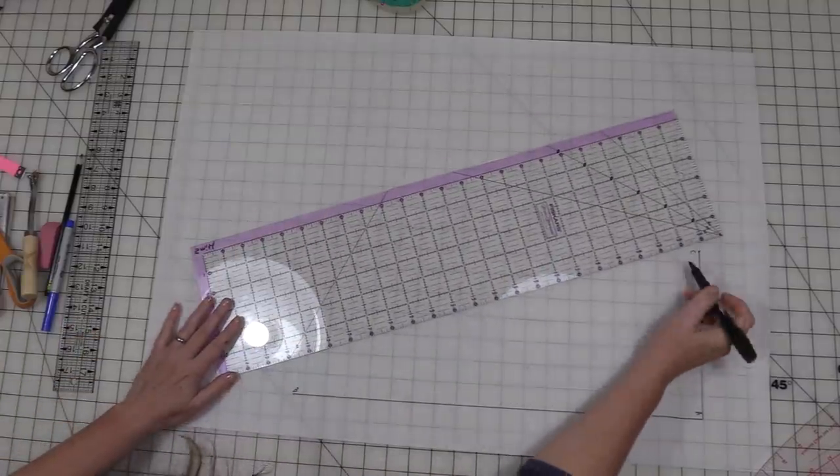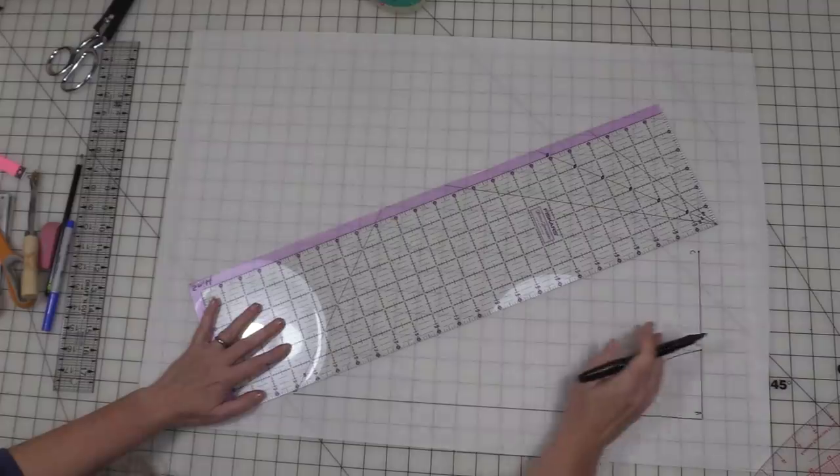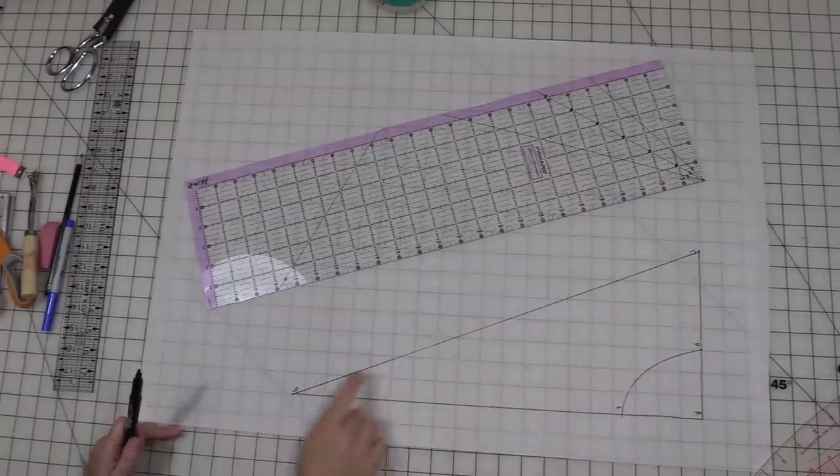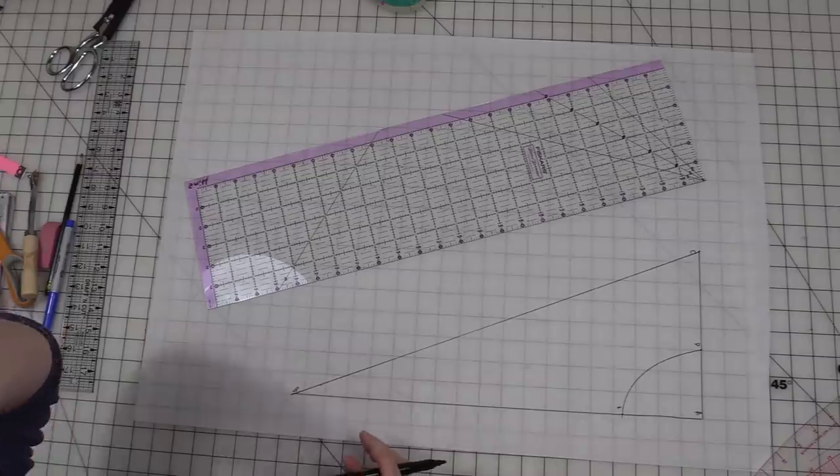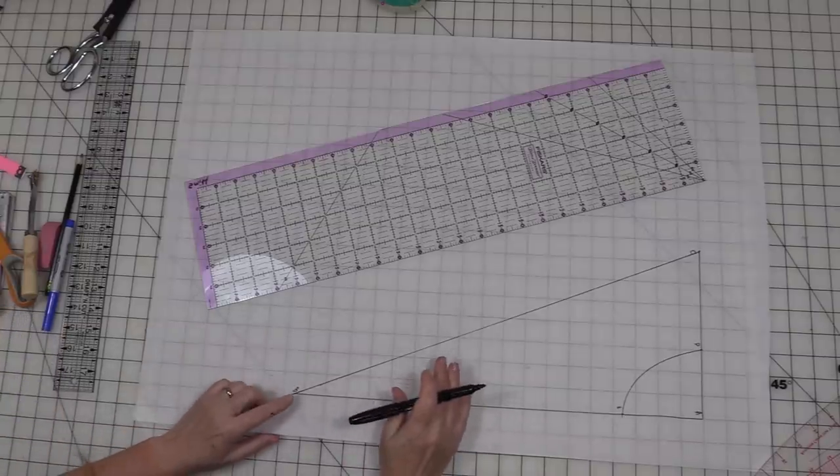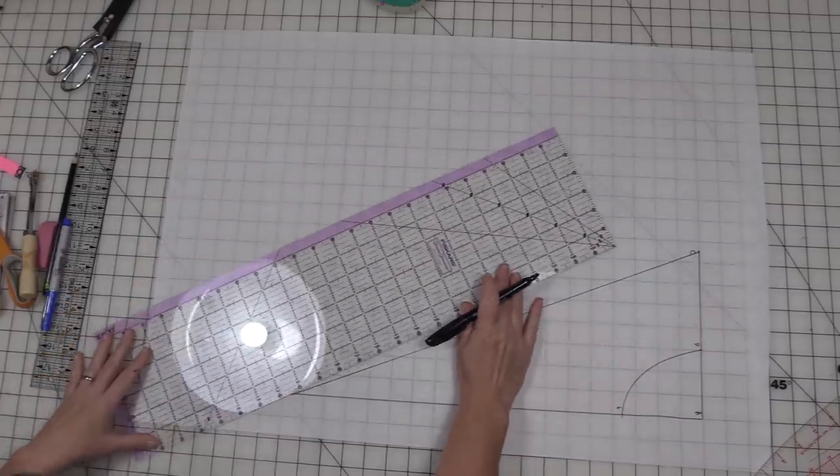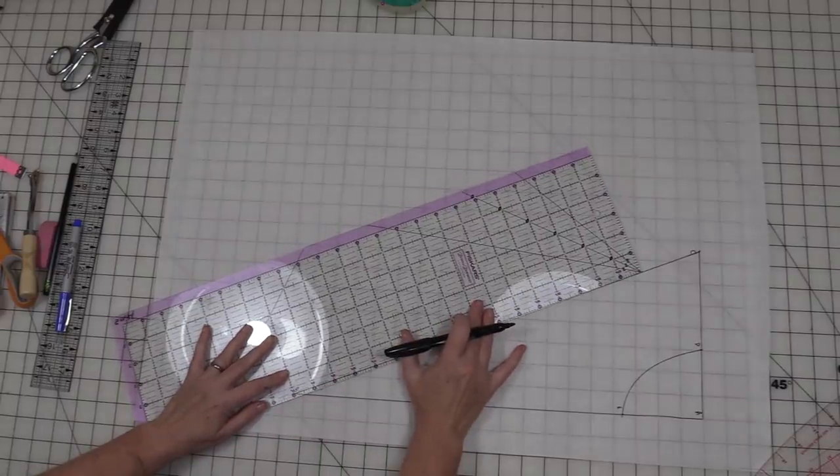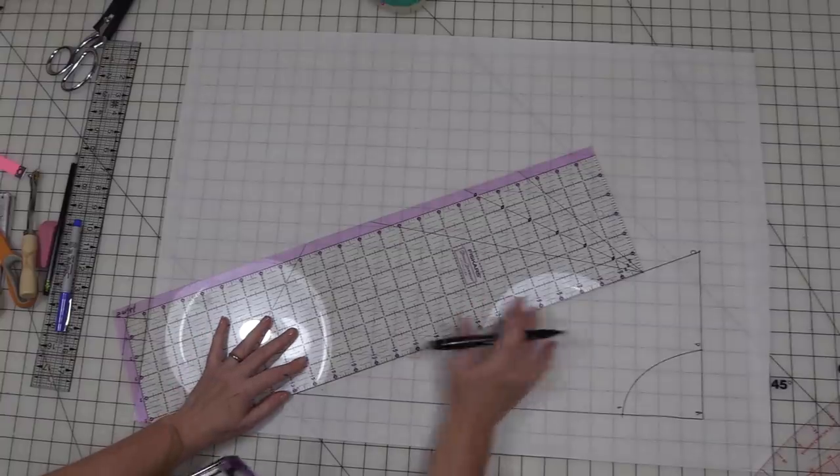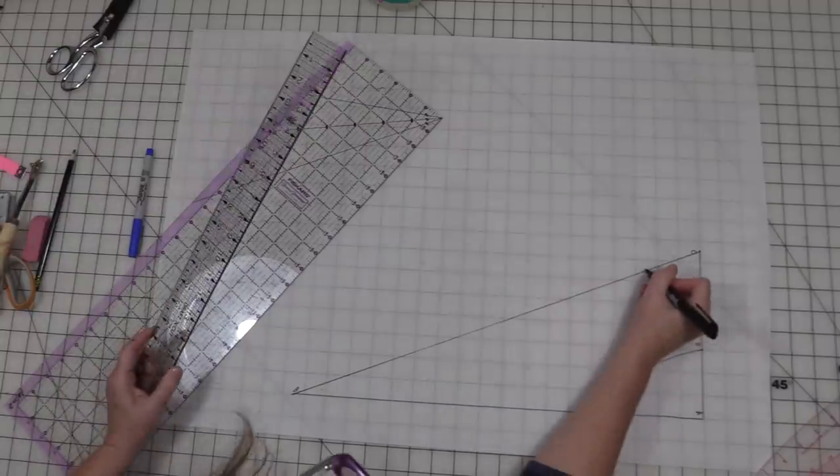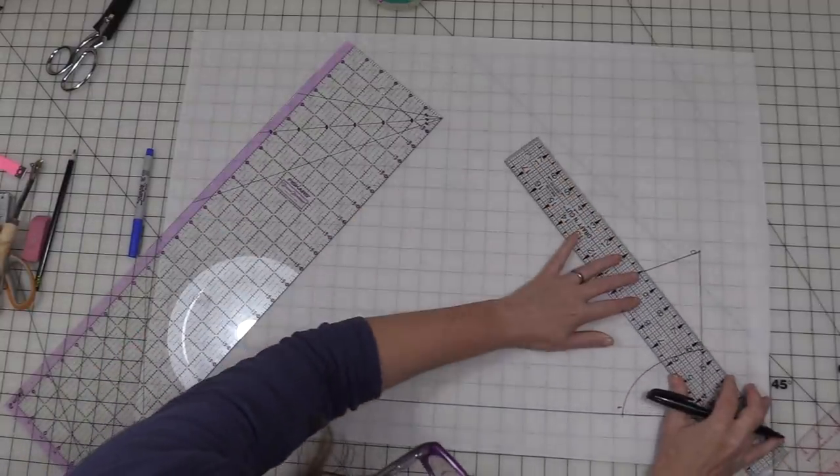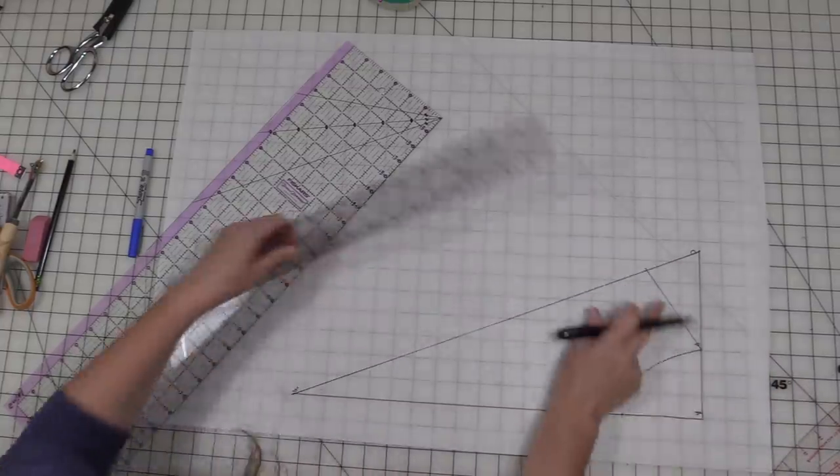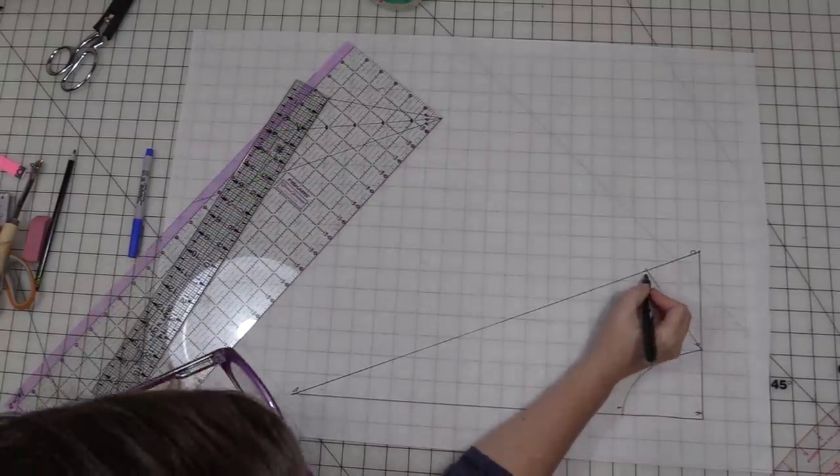Next thing we're going to do is we're going to make a diagonal line between C and B. Our next measurement is going to be marked along this diagonal line and you should have a measurement that you took from shoulder to center waist. And that's what we're going to mark here. Mine was 17. So I've got my 17 lined up down here on B. And I'm going to make a mark right here. Now I'm going to come from this mark over. This is going to be my new shoulder seam. This is our new shoulder seam. We're going to label it F.